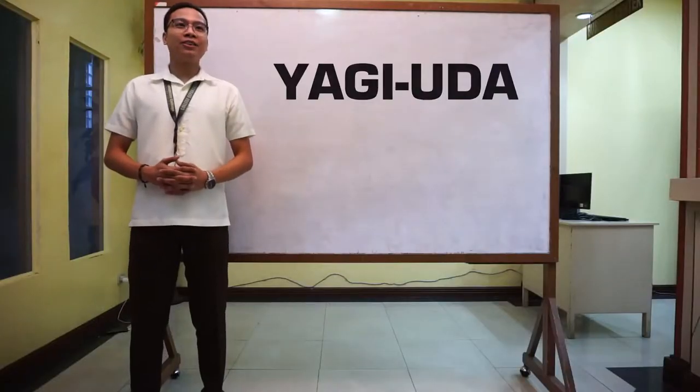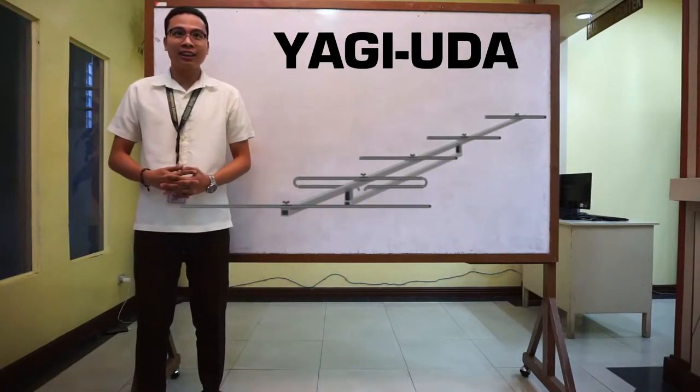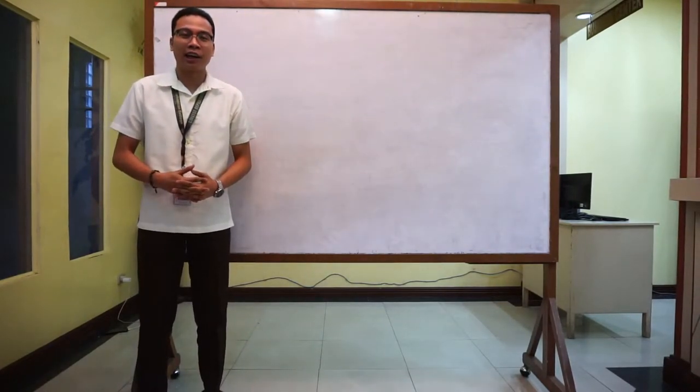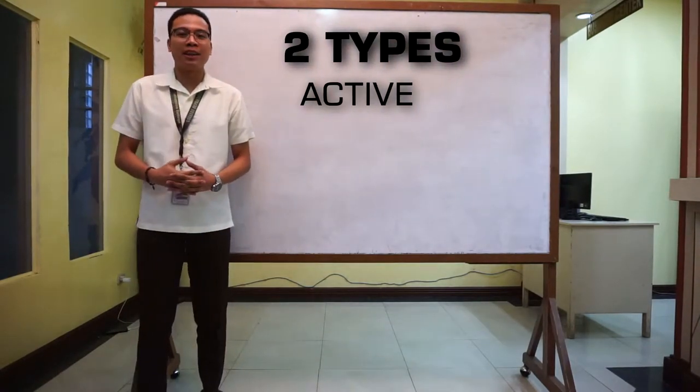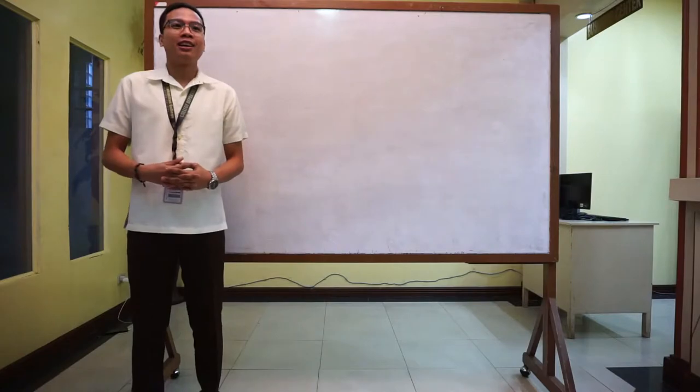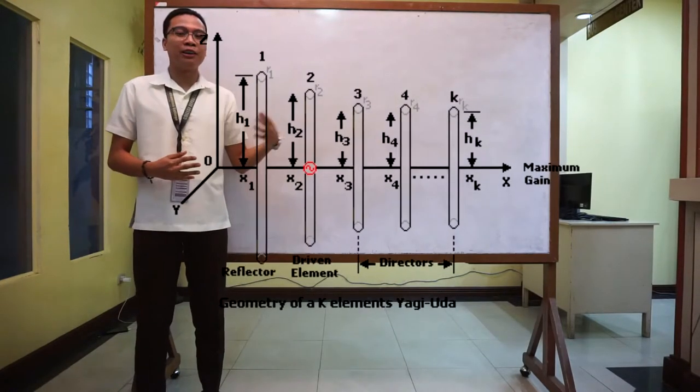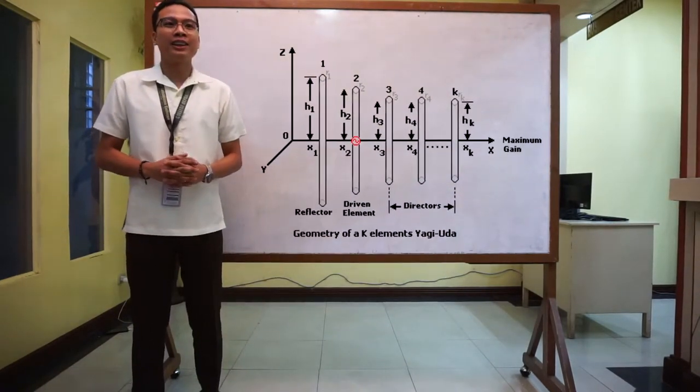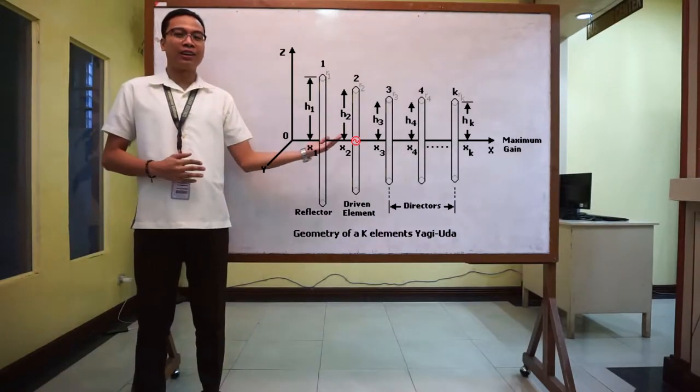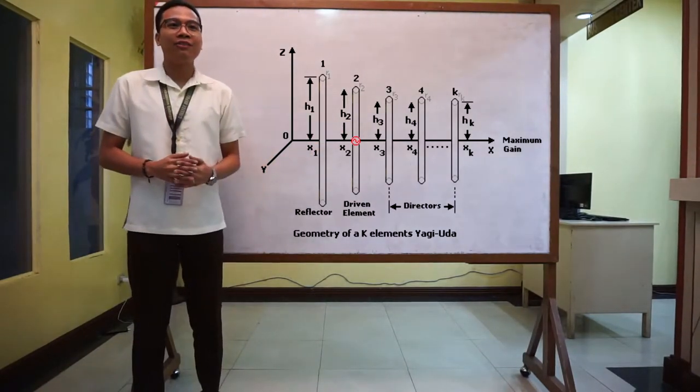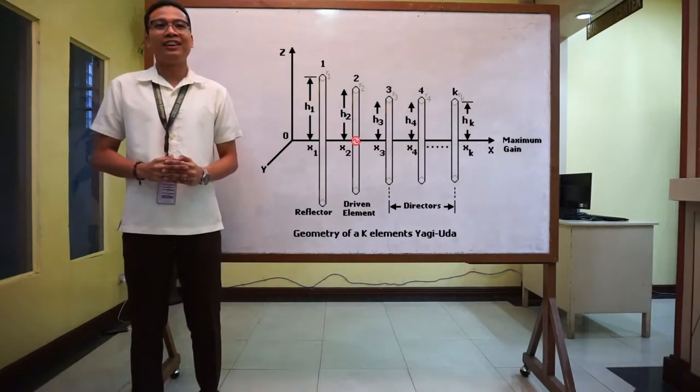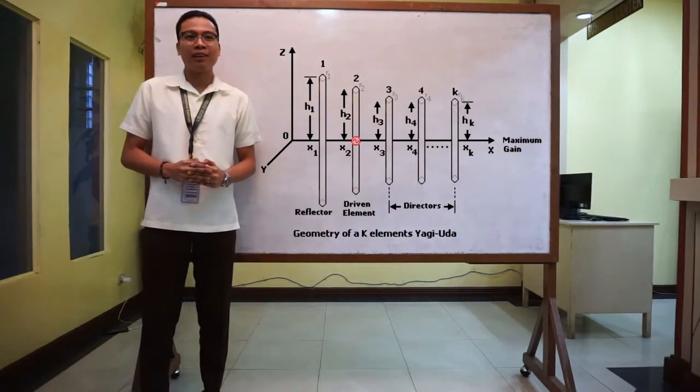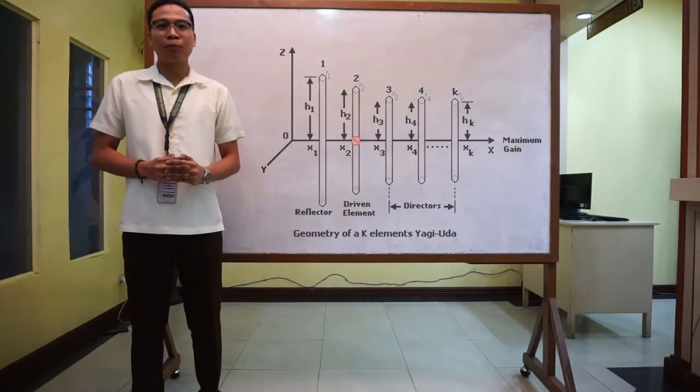The Yagi-Uda is a directional area, meaning it receives data from one specific direction. It has two types of elements, the active element and the parasitic element. The active element consists of the driven element, while the parasitic element consists of the reflector and the director. The driven element is the only element that is connected to the supply, while the director and reflector depend on the driven element for power.